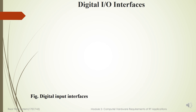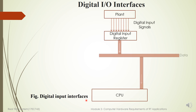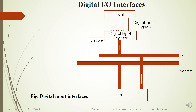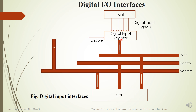Digital Input-Output Interface. In this slide, we will understand what is Digital Input Interface. Here we have to understand that plant outputs are basically logical signals. In the Digital Input Interface, the CPU is reading input from the plant. Plant outputs, whatever it is sending, are logical signals which appear on these lines, which are then connected to the Digital Input Register.